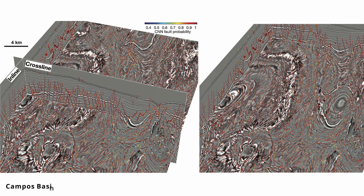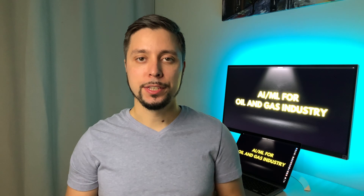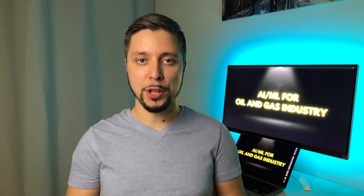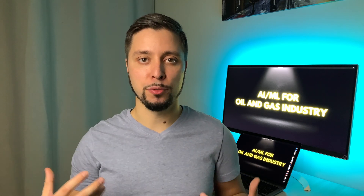The last example uses seismic acquired at the Campos Basin offshore Brazil. This image shows that the sediments are heavily faulted due to salt bodies at the deeper part. The neural network's fault probabilities label closely spaced faults in the seismic data set clearly and accurately. On time slices, the faulting patterns are clearly visible. Although the neural network is trained only on synthetic data, it works pretty well for 3D seismic images recorded at totally different surveys.